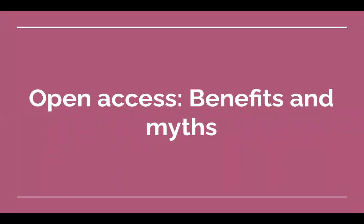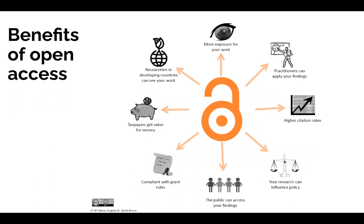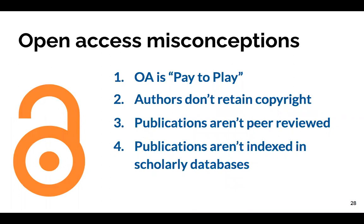Now let's talk about open access benefits and myths. Why is open access important? It helps accelerate the discovery of your scholarship because it's available to all. It enriches the public and improves education, again because these materials are available to everyone. There are also many more benefits, from increased exposure to allowing practitioners to apply findings quickly, improving citation rates, influencing policy, and complying with grant rules. However, there are also some misconceptions about open access: that it is pay-to-play with no peer review, that authors don't retain copyright, that publications aren't peer reviewed, and that publications aren't indexed in scholarly databases.